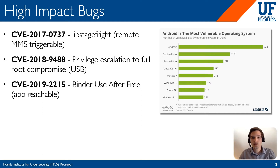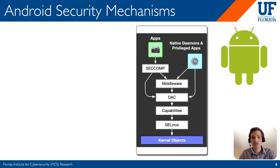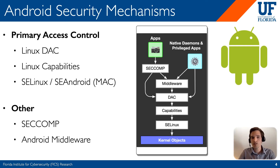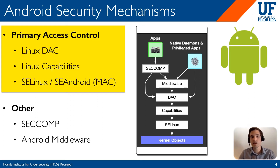Android does its best to defend against these kinds of attacks using a large combination of security mechanisms, three of which are Linux DAC, Linux capabilities, and SELinux, also known as SEAndroid. This is a mandatory access control policy, and these three together formulate much of what Android's security policy is. We'll be focusing on these first three and how they interact together.